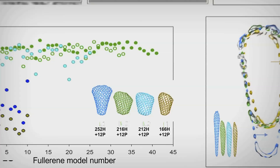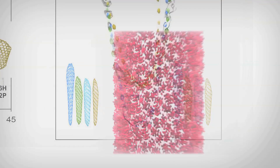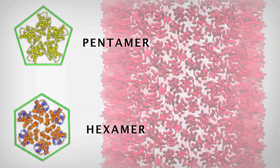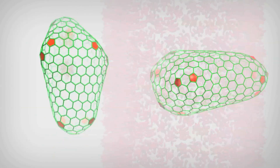Before this project, we knew the capsid was a polymorphic structure, meaning no two are going to be identical. We knew the building blocks — that it was made of pentamers and hexamers — but all that information was known only for isolated parts. We didn't have the whole structure together.